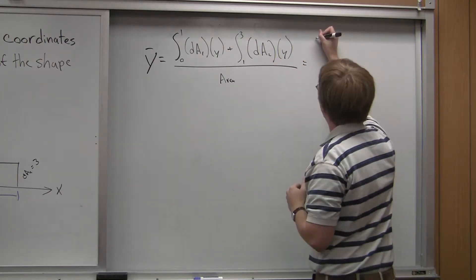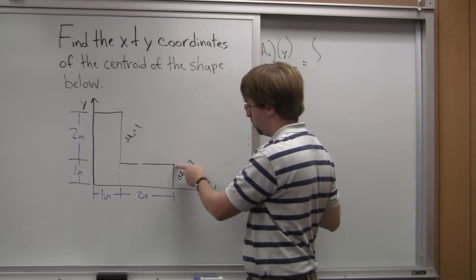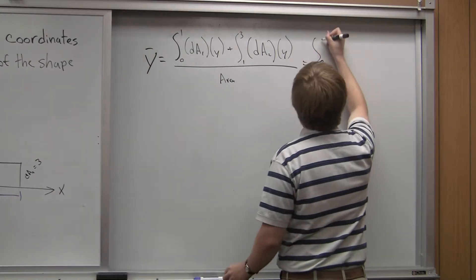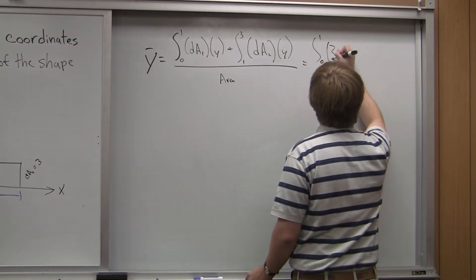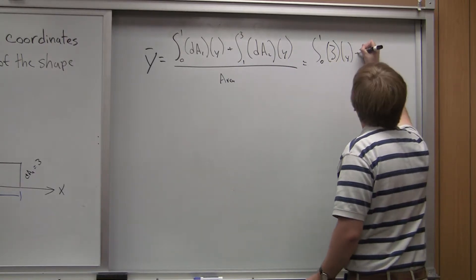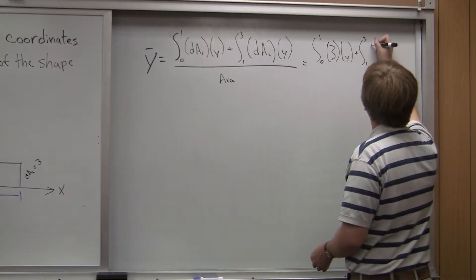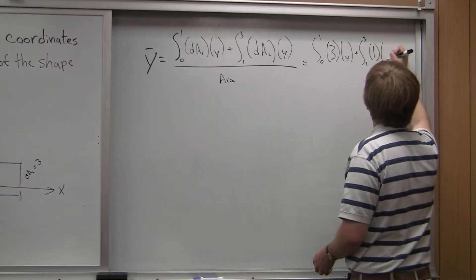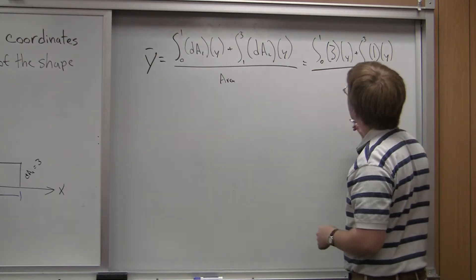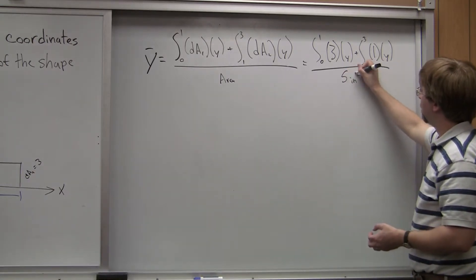dA1 — the width from zero up to one inch vertically — is three inches. dA2 — the width from one to three inches — is one inch. So: the integral from zero to one of three times Y, plus the integral from one to three of one times Y, all divided by the area, which is still five square inches.